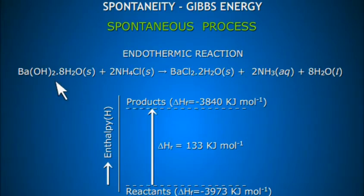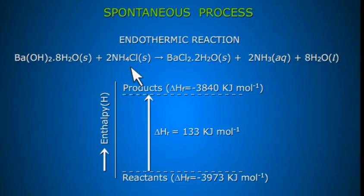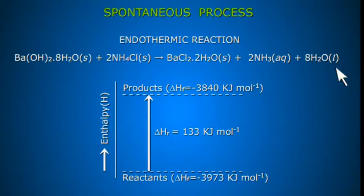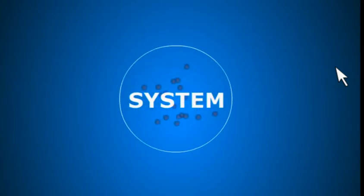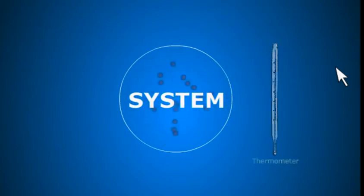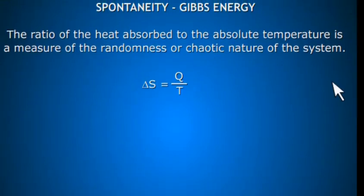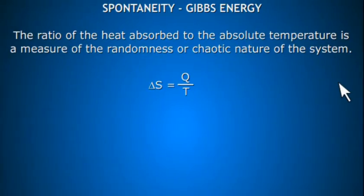For example, the reaction between two solids — barium hydroxide and ammonium chloride — is spontaneous as well as endothermic. It is seen that the randomness or chaotic nature of the products is more than that of the reactants because there are liquid products. Liquid molecules are more mobile than solid molecules, therefore the random nature of the products is greater. This randomness depends on the heat absorbed by the system and the temperature at which the heat is absorbed. The ratio of heat absorbed to absolute temperature is a measure of the randomness or chaotic nature of the system.